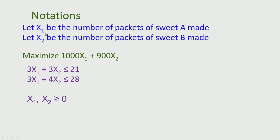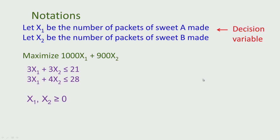We will now go on to define what a linear programming problem is and why this problem falls under that category. We wrote two variables: let X1 be the number of packets of sweet A made, and let X2 be the number of packets of sweet B made. These variables that we wrote are called decision variables — they represent the decisions that have to be made in the product mix problem.